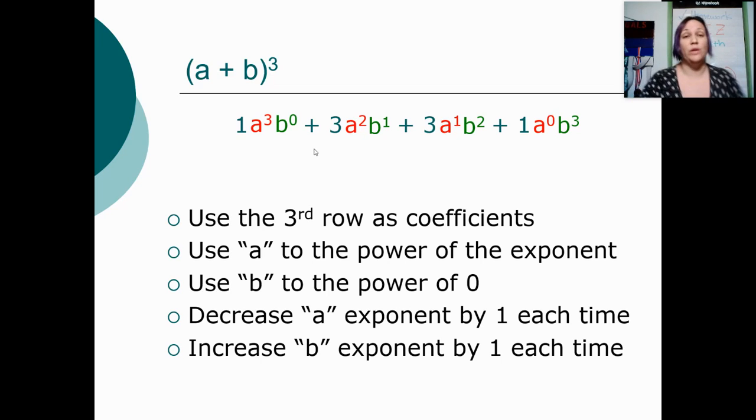Also, all of our number ones can become invisible. So the best way to write this final answer is a to the third plus 3a²b plus 3ab² plus b to the third. This is what I would get if I multiplied (a + b) times (a + b) times (a + b).